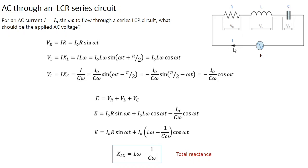If I is the instantaneous value of the current flowing through the circuit, then Vr equals current I multiplied by resistance R, which in terms of peak current is I₀R sin(ωt). For Vl, this is current multiplied by the inductive reactance XL, which is I·Lω. So Vl equals I₀Lω sin(ωt). But in the case of an inductor, the voltage leads the current by π/2, so we write it as sin(ωt + π/2), which equals cos(ωt). Therefore Vl equals I₀Lω cos(ωt).